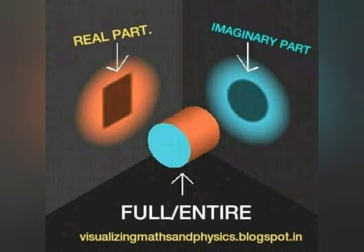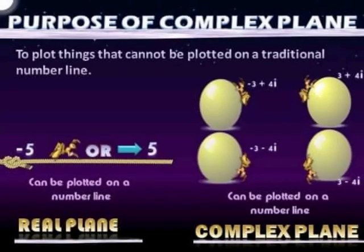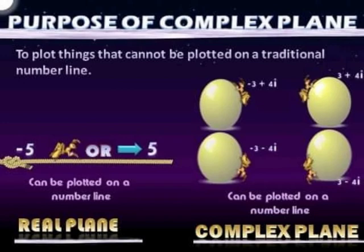Imagine an ant walking on a rope — it can only move in one dimension, so its velocity is simply plus five or minus five. But if the same ant is made to walk on the surface of a sphere, its velocity gets split into two components: a horizontal component (the real part), represented by minus 3, and a vertical component represented by 4i. The net magnitude is still 5, calculated as the square root of 3 squared plus 4 squared — that is, the square root of 9 plus 16 — which equals 5.